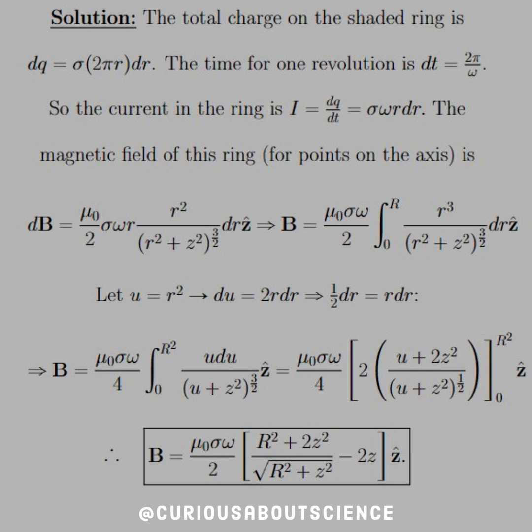Then just calculate through. We get this pretty quick thing to evaluate. And we get that the magnetic field is mu naught sigma omega over 2 times R squared plus 2z squared divided by square root of R squared plus z squared minus 2z in the z hat direction.